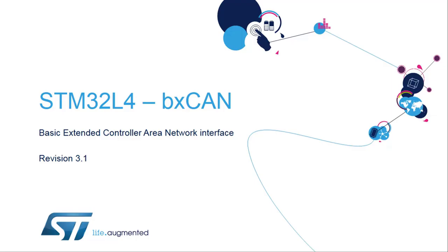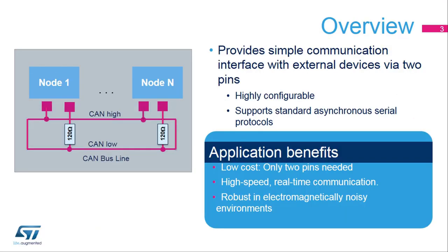Hello and welcome to this presentation of the STM32L4 basic extended controller area network interface. It will cover the main features of this interface, which is widely used to connect multiple devices to the microcontroller. The controller area network, or CAN, is a standard serial differential bus broadcast interface allowing the microcontroller to communicate with external devices connected to the same network bus. The CAN interface is highly configurable, allowing nodes to easily connect using two wires, with applications benefiting from the low-cost, robust, and direct asynchronous serial interface.